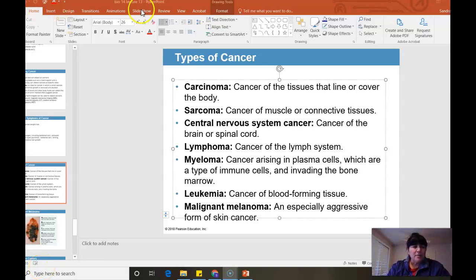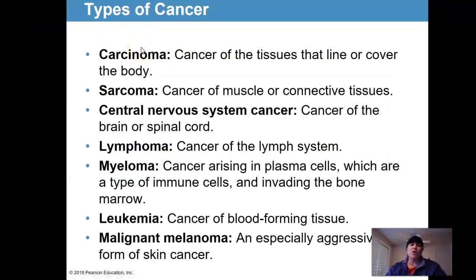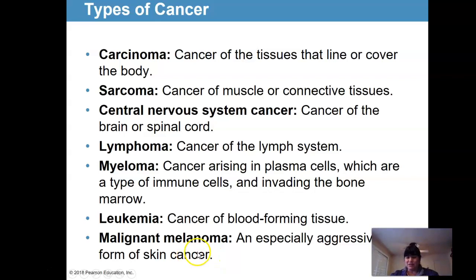We were talking about cancer and types of cancers. If you hear the suffix -oma, usually it's cancer. Carcinoma is cancer of tissues that line or cover the body. Sarcoma relates to muscle and connective tissue cancer. Lymphoma involves the lymph system. Myeloma comes from plasma cells. Leukemia is cancer of blood-forming tissues. Malignant melanoma is an aggressive form of skin cancer. These are examples — it's really about which cells of the body are having that abnormal growth causing cancer.